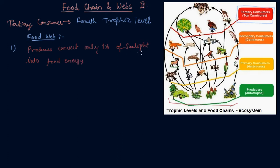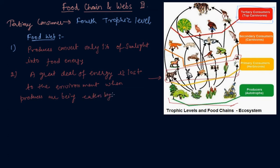The second step is when green plants are eaten by the primary consumers. When green plants are eaten by the primary consumers here, a great deal of energy is lost as heat to the environment when producers are being eaten by primary consumers.